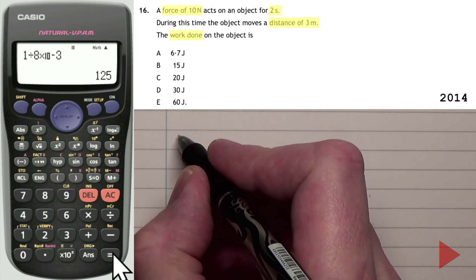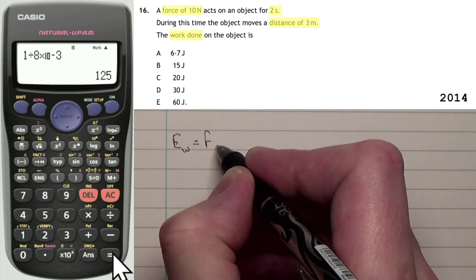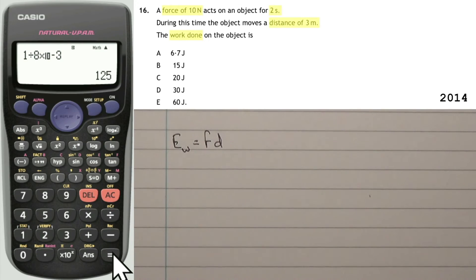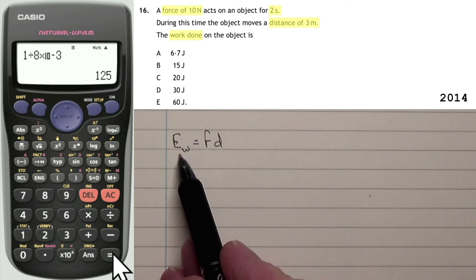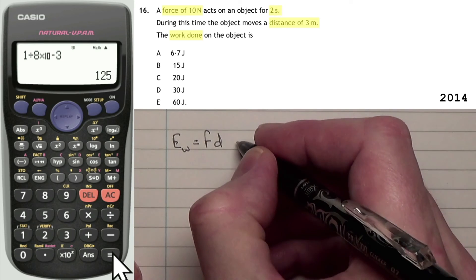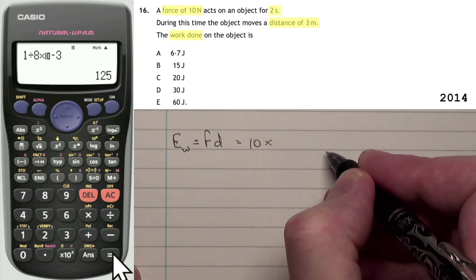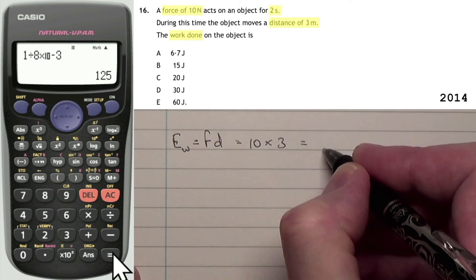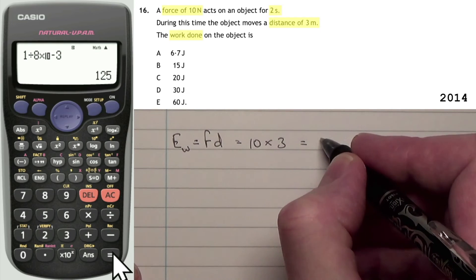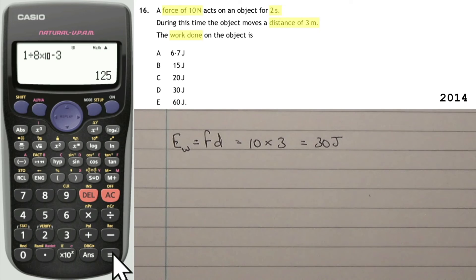Here we go. So hopefully we found that the equation was work done is equal to force times distance. Now that time of 2 seconds wasn't required at all. If you know your physics equations, then you'll know that this work done, which is energy, we could use that together with the time to actually calculate power. We're not doing that in this question though. So all we need to do is multiply force. What was that? That was 10 newtons. 10 newtons multiplied by 3 meters. And that's going to give us... I'm not going to use the calculator for this. That's going to give us 30 joules. So our answer is D.